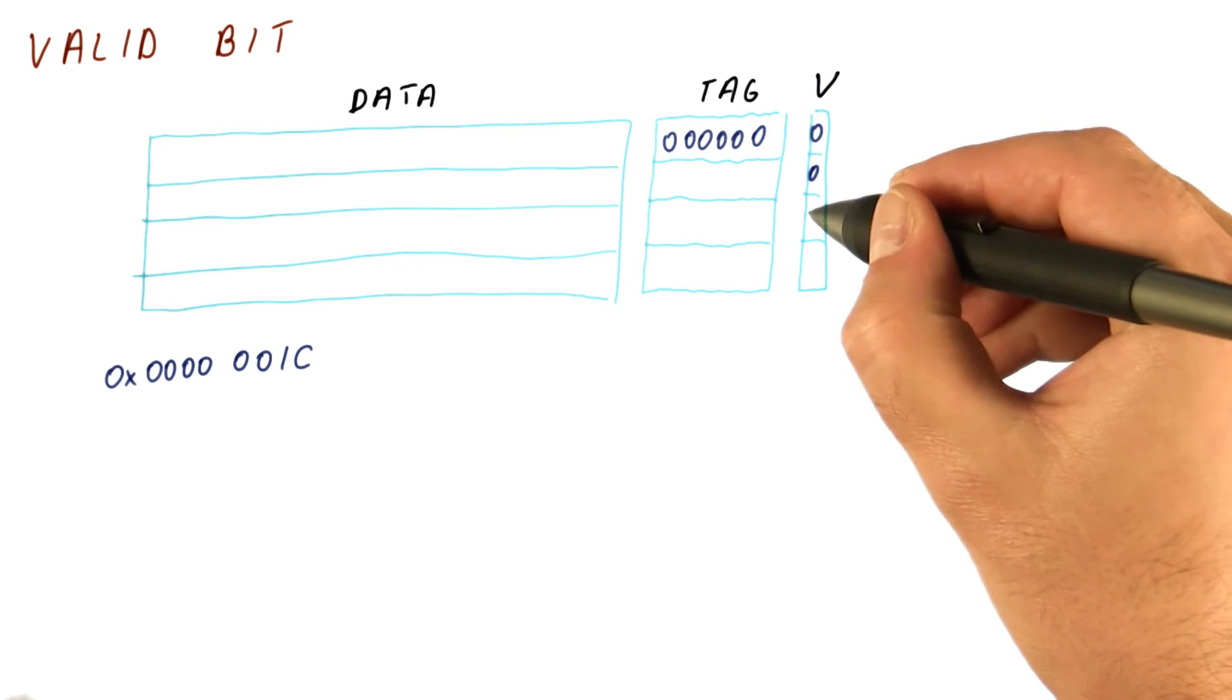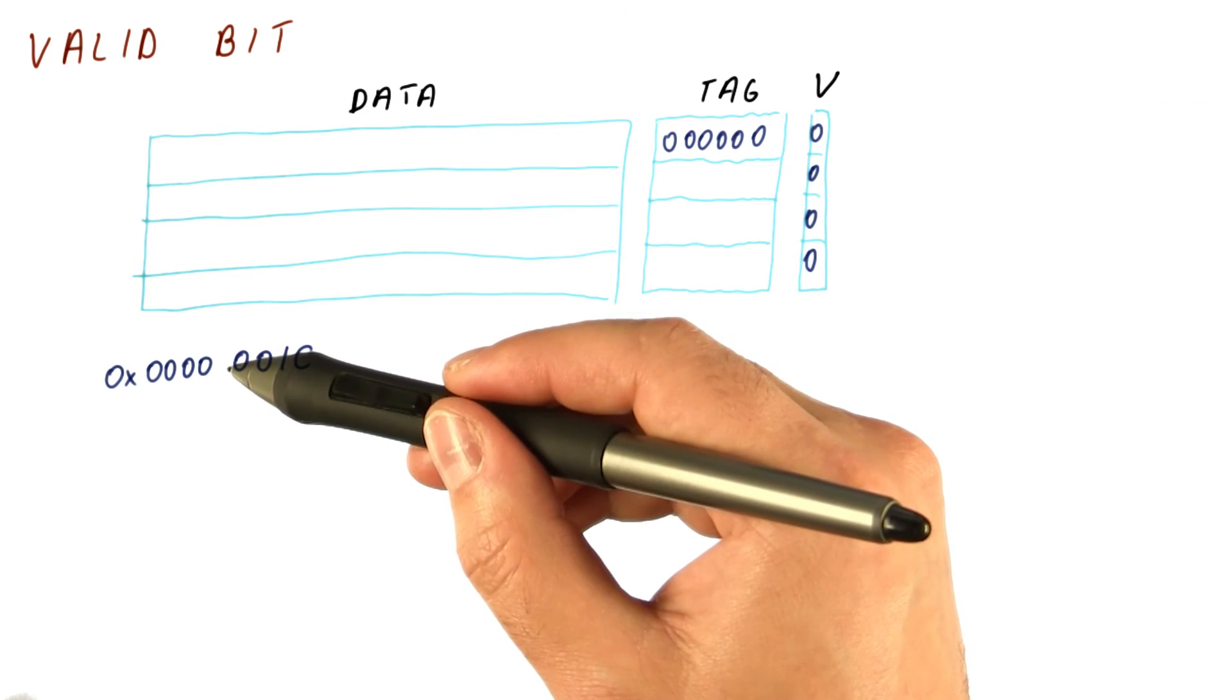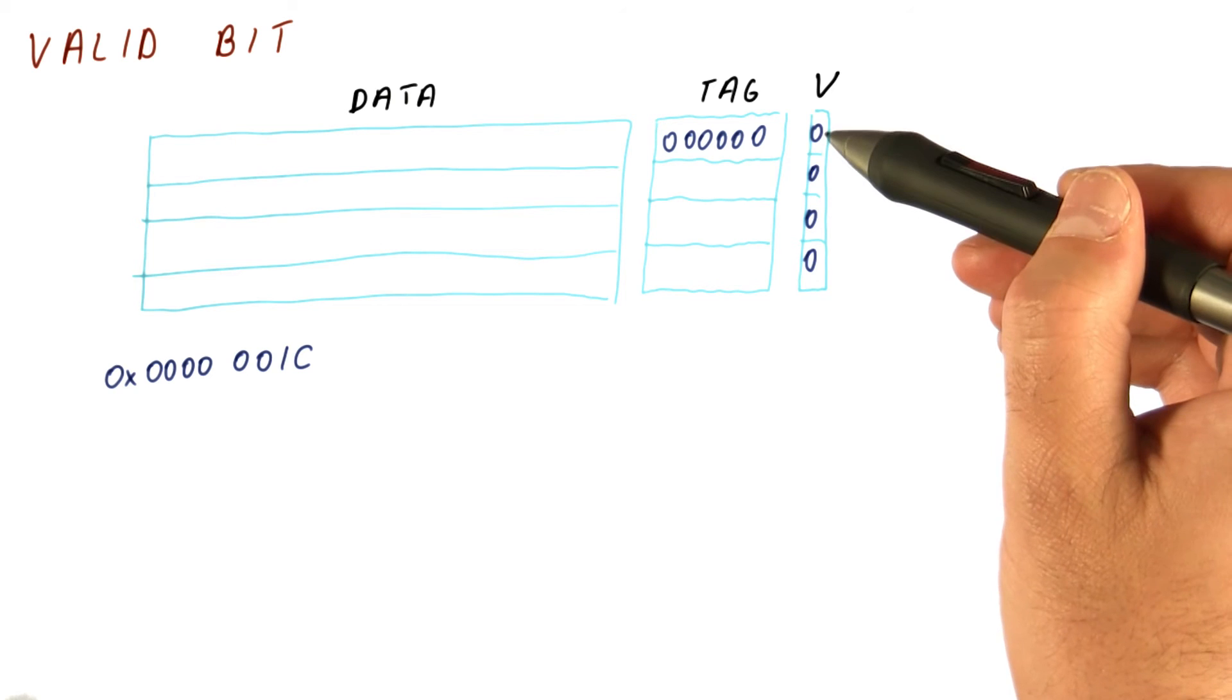Initially, the valid bits need to be set to zero, which means that if our tag matches the address but the valid bit is zero, we treat that as not a hit.